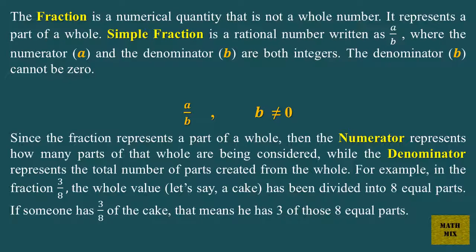Since the fraction represents a part of a whole, the numerator represents how many parts of that whole are being considered, while the denominator represents the total number of parts created from the whole. For example, in the fraction 3 over 8, the whole value — let's say a cake — has been divided into 8 equal parts. If someone has 3 over 8 of the cake, that means he has 3 of those 8 equal parts.